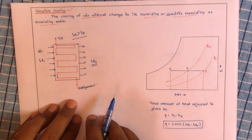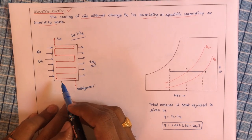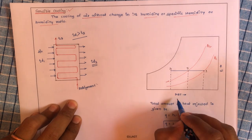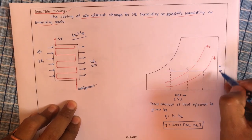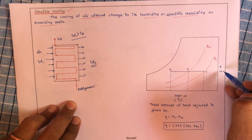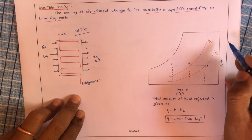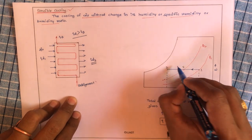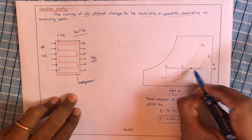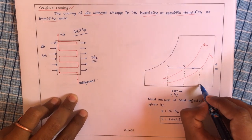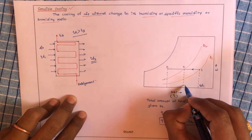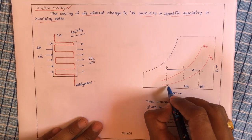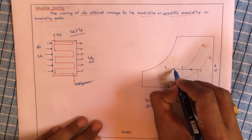Now let us see how we can plot this sensible cooling process on the psychrometric chart. The x-axis represents the dry bulb temperature in degrees Celsius, and the y-axis represents the relative humidity, specific humidity, or humidity ratio. We label this as process 1–2. Temperature at point 1 is Td1, temperature at point 2 is Td2, and the coil temperature is T3.